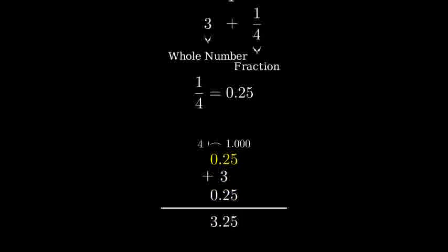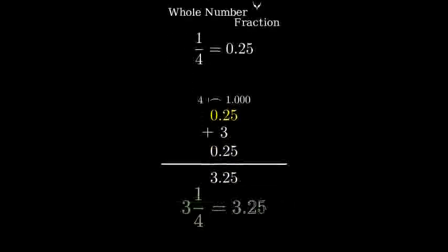Now, we add the whole number 3 to 0.25. 3 plus 0.25 equals 3.25.